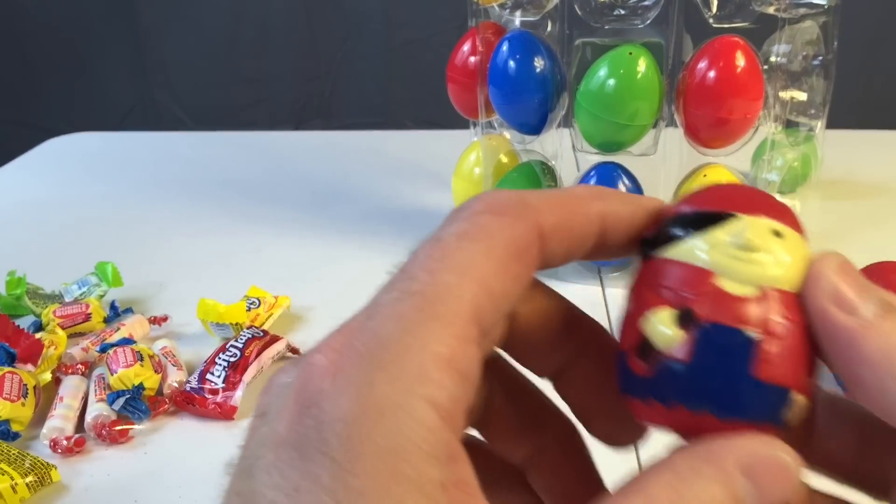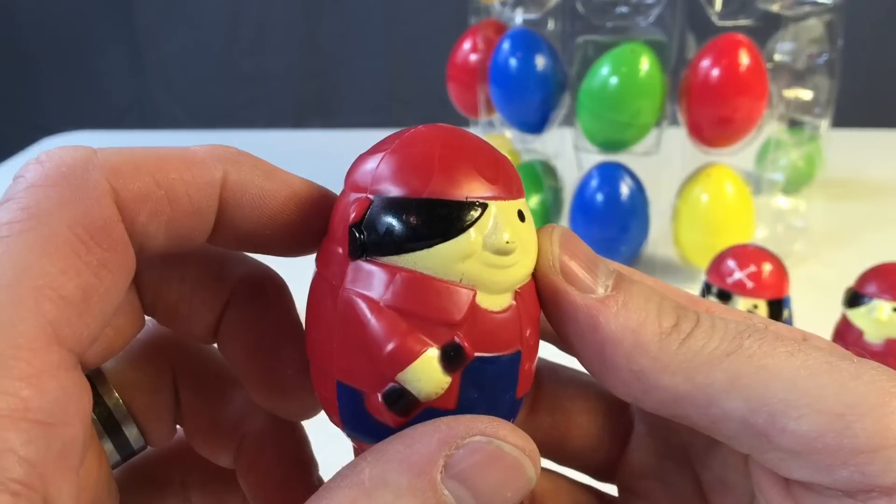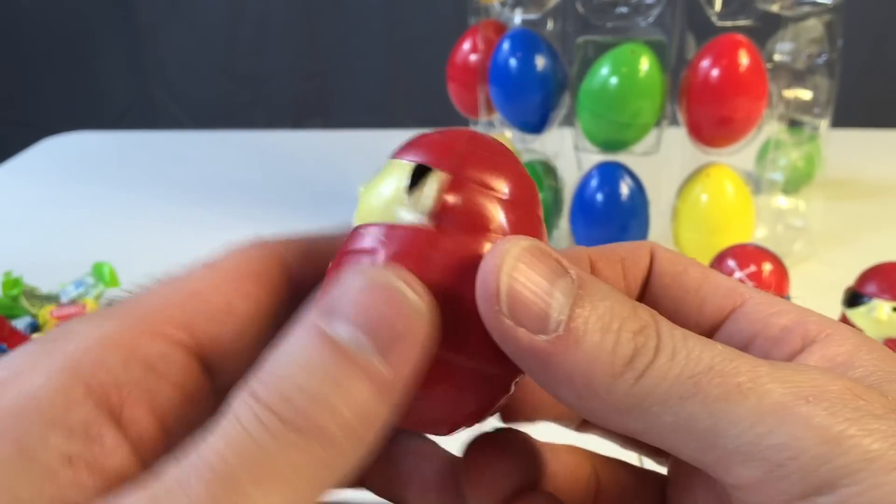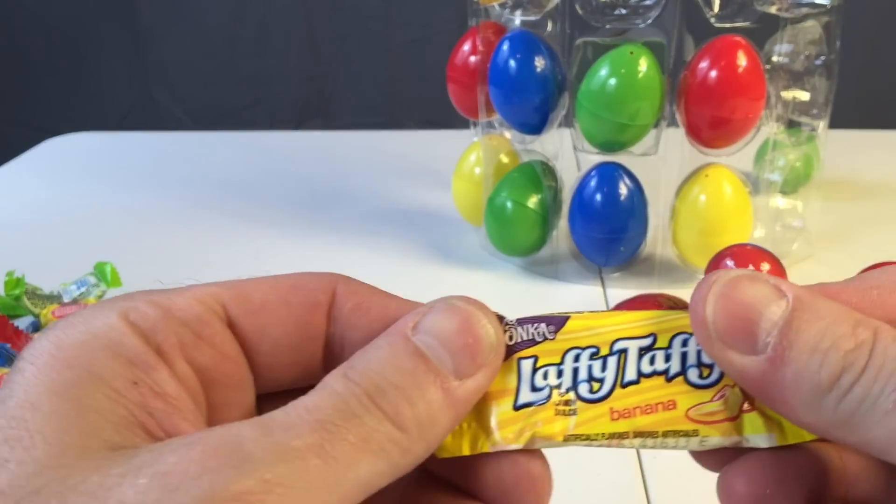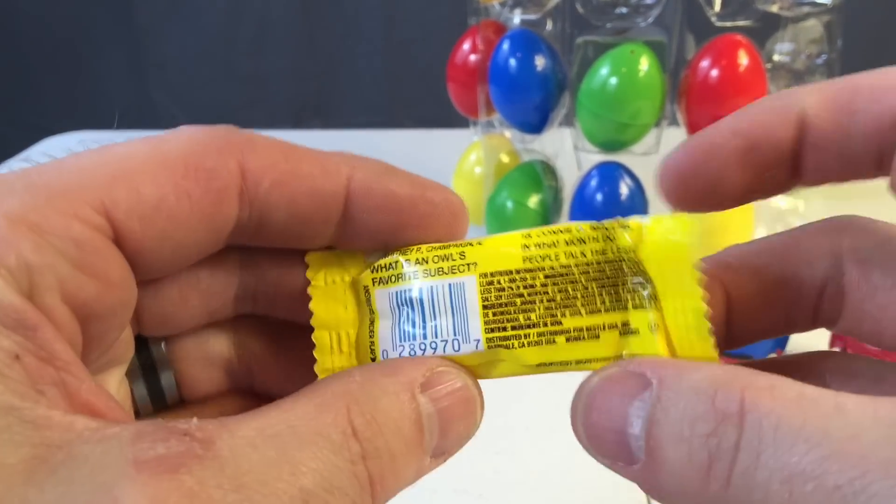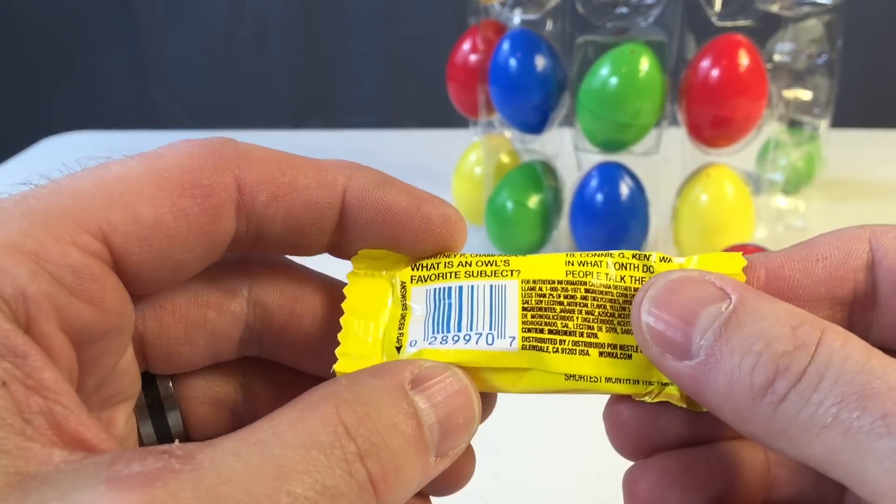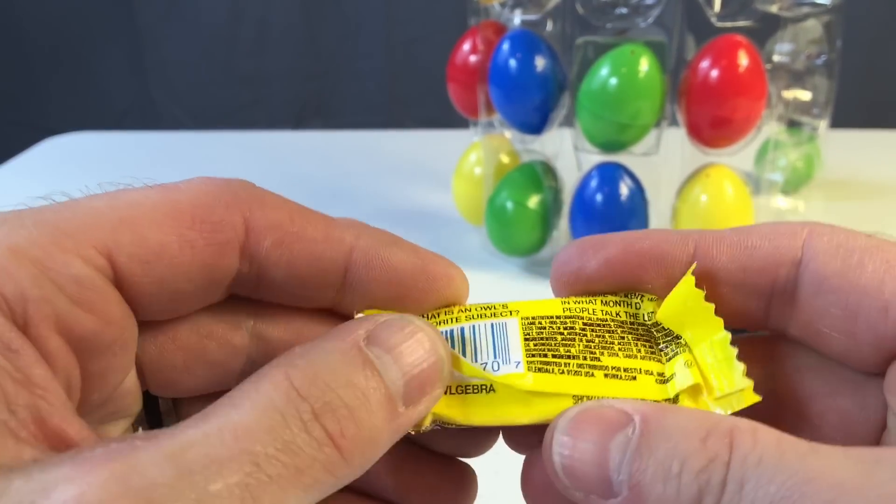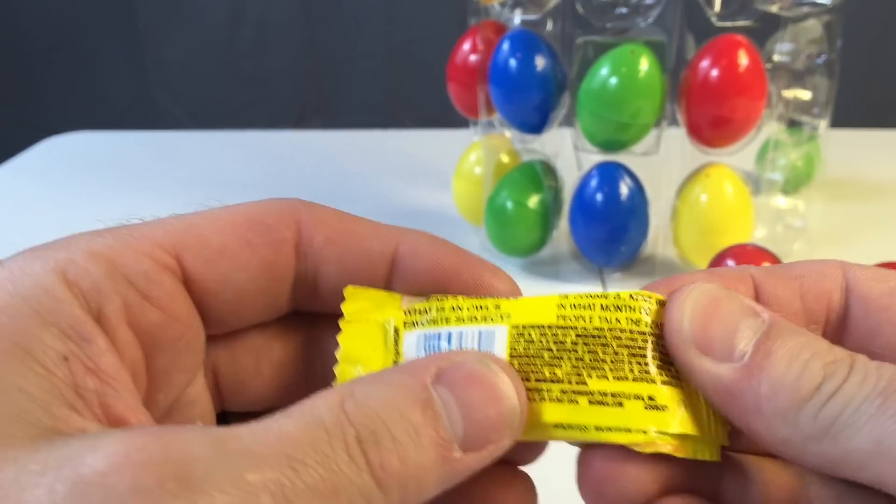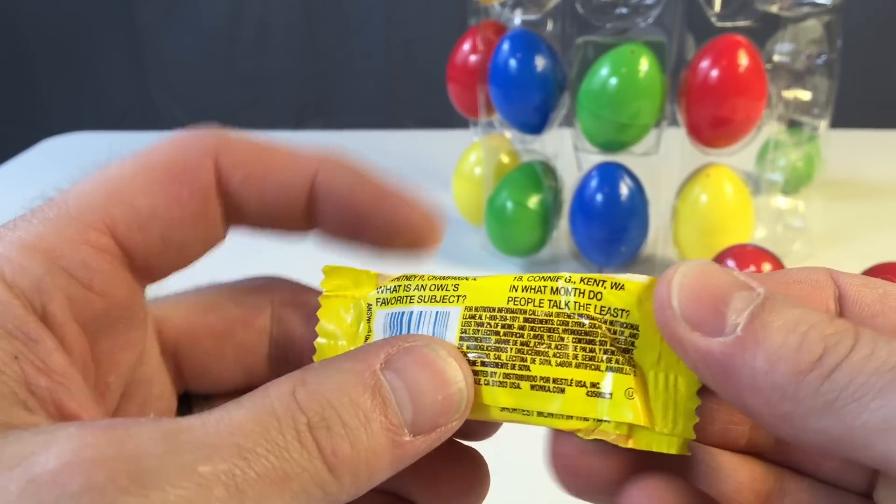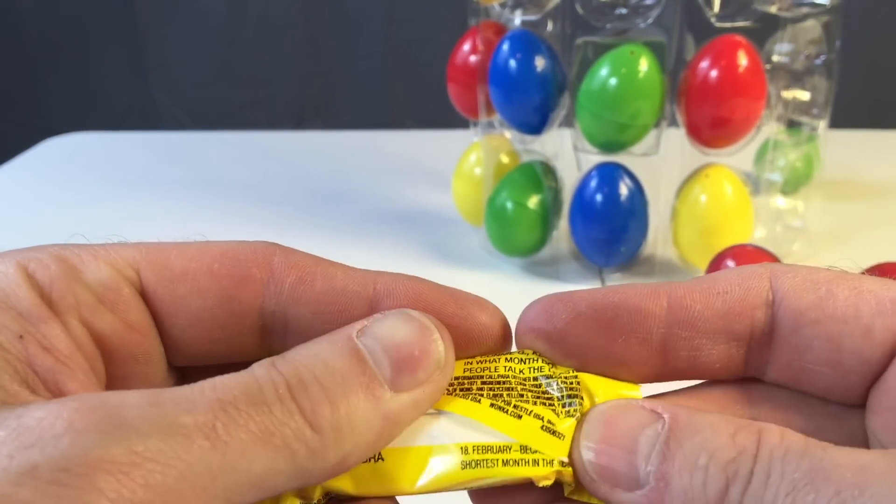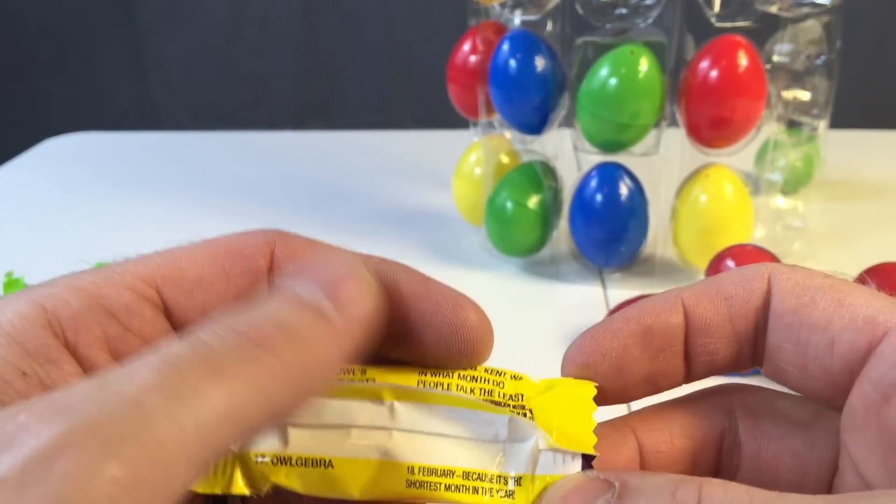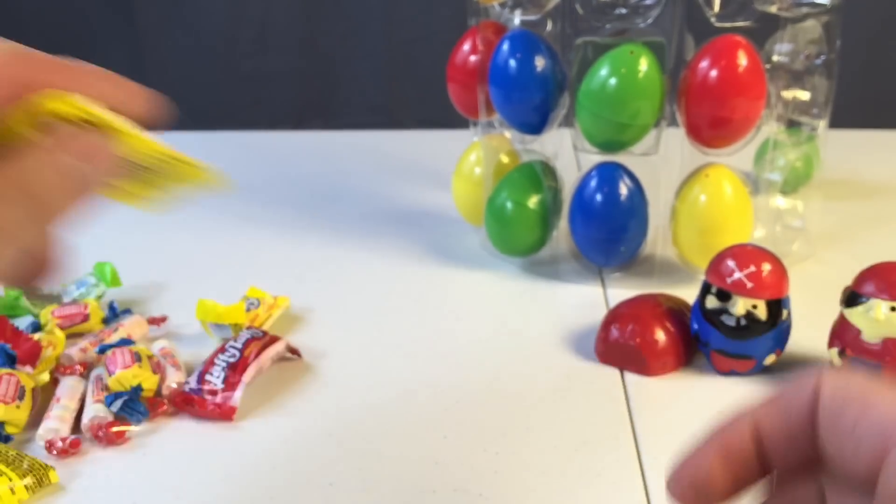How about this guy? He's got a patch over his eye. So does the other parrot, huh? More banana Laffy Taffy. What's an animal's favorite subject? Not sure. Algebra. Nice. In what month do people talk the least? February is the shortest month in the year. That's more logical than funny, but oh well.